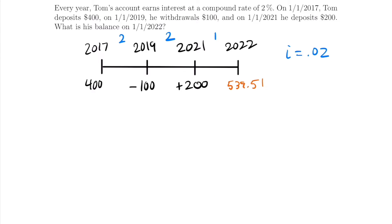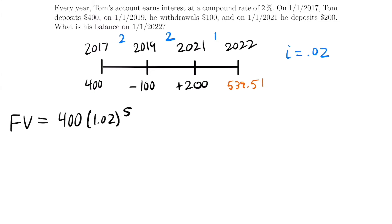Thankfully there is a shorter way. Now we're going to do the short way, and you might be a little confused and think it shouldn't get the same answer — but it does. The key idea is to take into account the entire timeline all at once, rather than in sections. So for the $400 deposit: how long is it in the account? From 2017 to 2022 is five years total, so we compound it by (1 + interest rate)⁵.